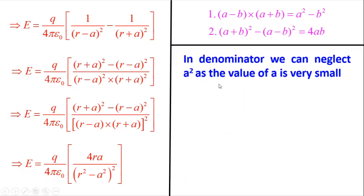Since the distance 2a between the negative and positive charge is very very small, we can neglect the value of a² in the denominator compared to r². So (r² − a²)² simplifies to r⁴.